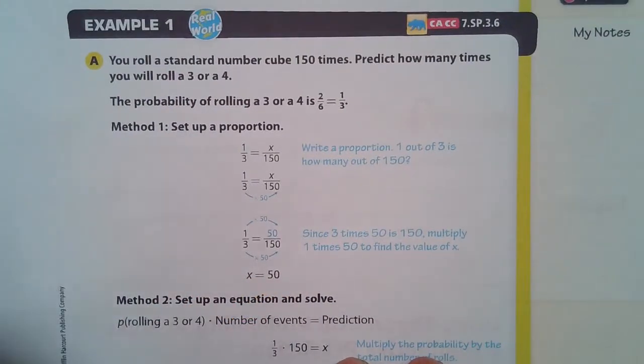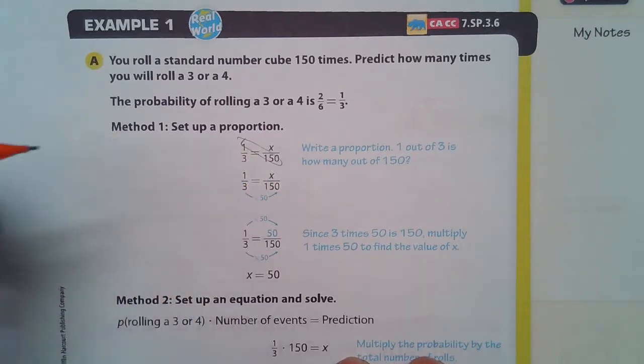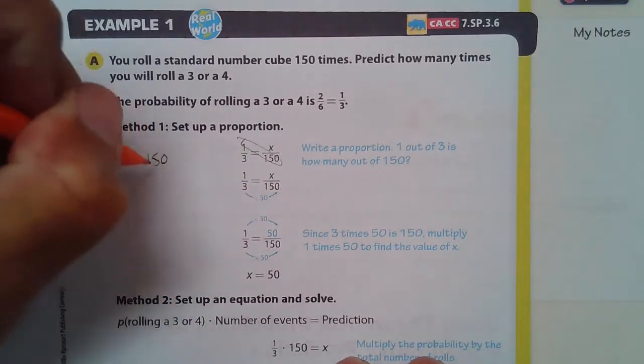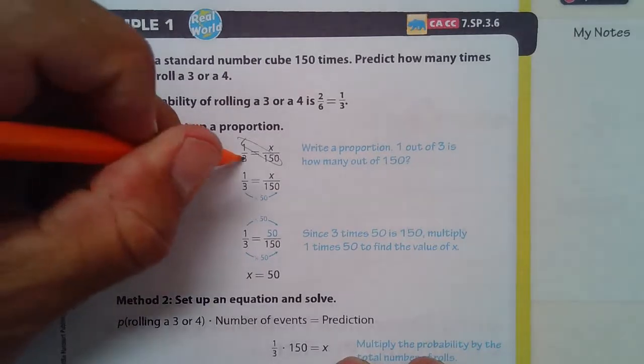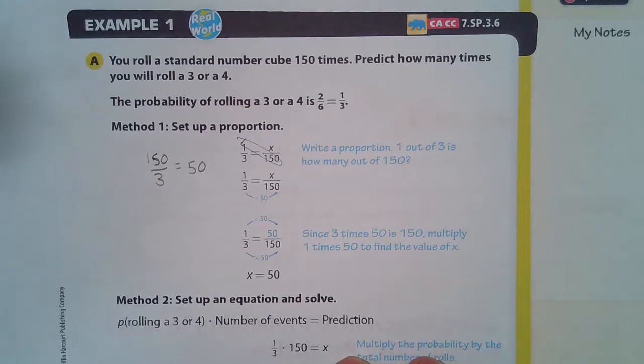You could also cross multiply and you could take 150 times one is 150. And then you divide by three and that is still 50.